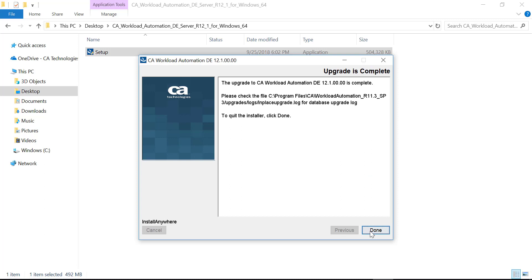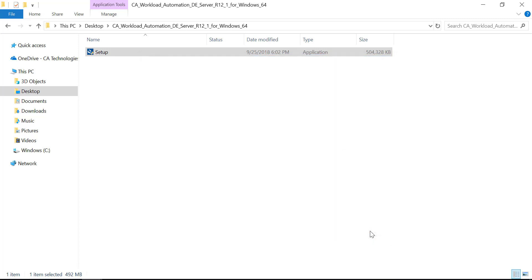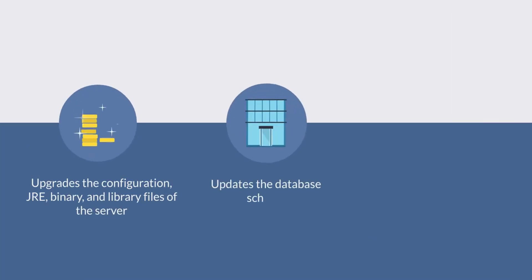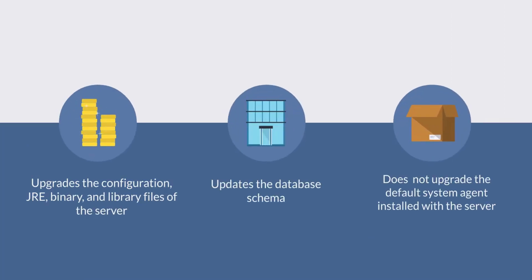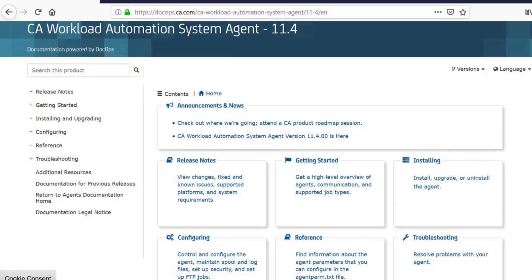Next, click Done and complete the upgrade. The in-place upgrade method upgrades the configuration, JRE, binary, and library files of the server, and it also updates the database schema. It does not upgrade the default system agent that is installed with the server. You must manually upgrade the agent to the latest release by referring to the CA Workload Automation agent's documentation.